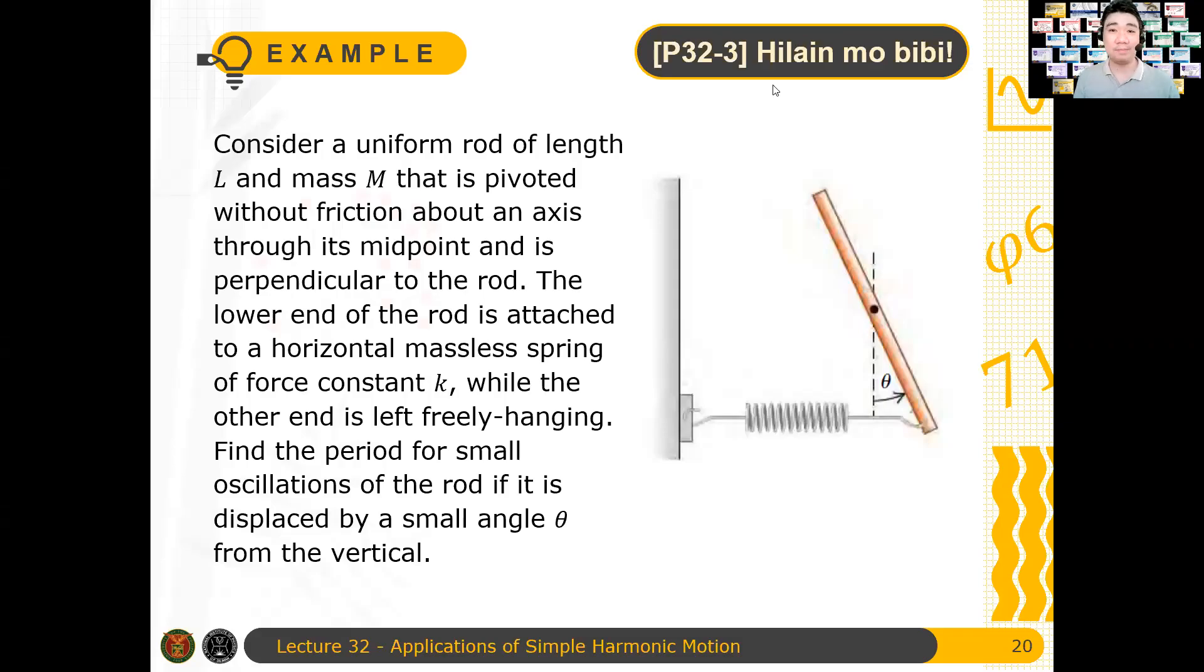Like this example here, Hilain Mabidi. This is our second to the last example, hopefully. Consider a uniform rod of length L and mass M that is pivoted without friction about an axis through its midpoint, and is perpendicular to the rod. The lower end of the rod is attached to a horizontal massless spring of force constant K, while the other end is left freely hanging.